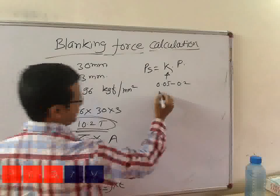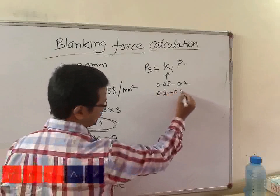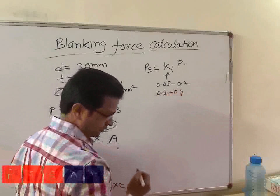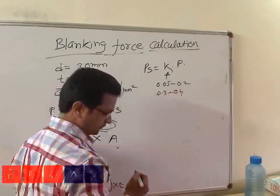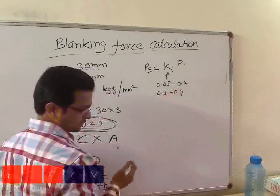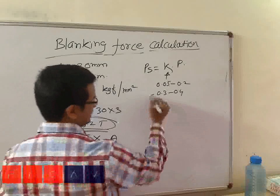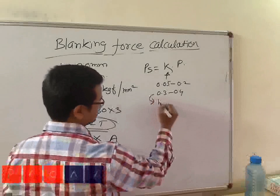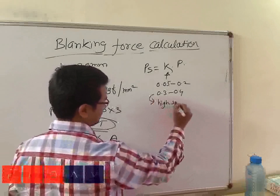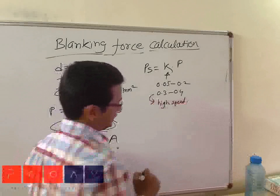This factor is usually 0.05 to 0.2 in general applications, while it is 0.3 to 0.4 in the case of stamping where high brightness requirement is there or high-speed cutting is being carried out.